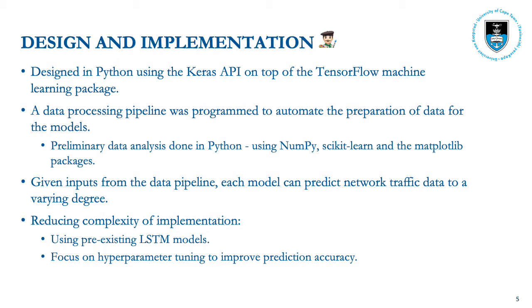This system was designed in Python using the Keras API and TensorFlow. It also includes a data processing pipeline and a preliminary data analysis, done using a variety of mathematical and machine learning packages. Given inputs from the data pipeline, each LSTM model is able to predict network traffic data to a varying degree of accuracy using a varying degree of computational resources. We used pre-existing LSTM model libraries and focused on the hyperparameter tuning process to improve prediction accuracy.